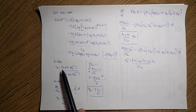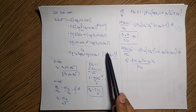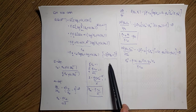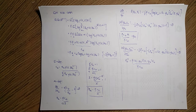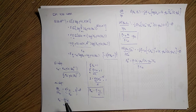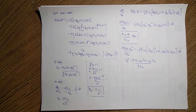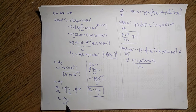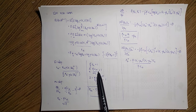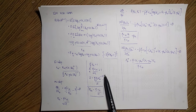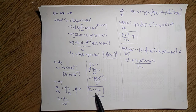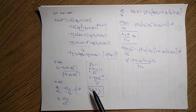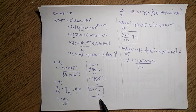For the maximization step, assuming I have these responsibilities, I introduce the Lagrangian with respect to the pi_k's, because those pi_k's should sum to one. I take the derivative of the auxiliary function with respect to pi_k — these terms are constant — and I solve for pi_k. Applying the constraint, the summation equals N over N, so pi_k is the summation of the responsibilities over N, normalized by the number of data points.